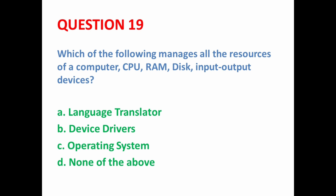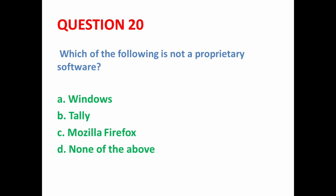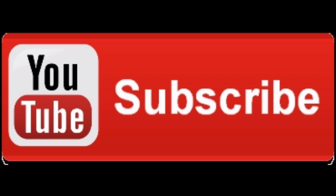Next MCQ: Which of the following is not a proprietary software? Windows and Tally are proprietary software, but Mozilla Firefox is not a proprietary software. So here option C is the correct option.